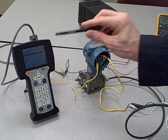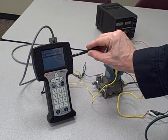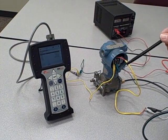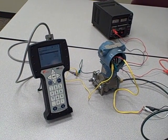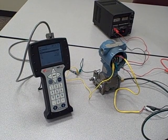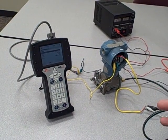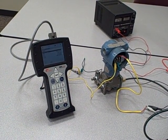So using this technology, we can interrogate the transmitter using a computer. We can take a look at its range values, change the range values, change parameters such as damping and linearization, perform calibrations, assign tag numbers, all kinds of stuff we could never do in the analog world.